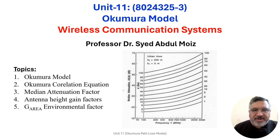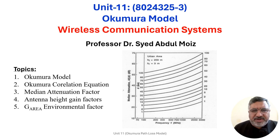Bismillahirrahmanirrahim. The Okumura model is a reliable path loss prediction tool for modern cellular as well as land mobile radio systems, especially in cluttered environments. It is very practical and standard in Japan's modern wireless communication system and can be applicable all over the world with little parameter adjustment. Today we will introduce the Okumura model, discuss the Okumura correlation equation, the median attenuation factor, the attenuation height gain factors, and finally the area factor.